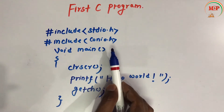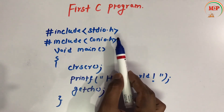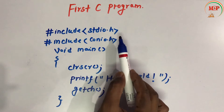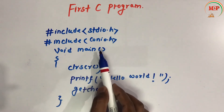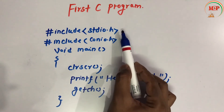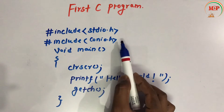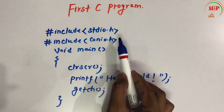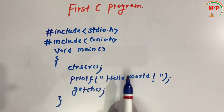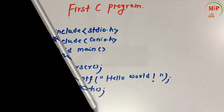As soon as I write this program and compile and run it, each header file is approximately about five to six hundred lines of code. When I compile and run, the compiler writes that entire code here. So if I count, this seven-line program expands to approximately 1200 to 1300 lines of code — that is 1200 to 1300 LOC (lines of code). This is why I need to include these header files rather than writing all that code every time. So this is all about the first C program.